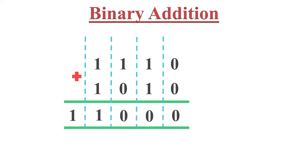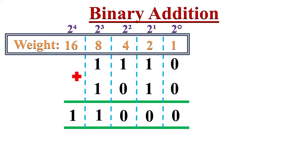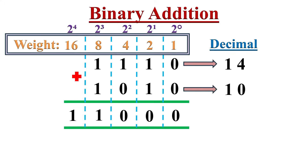Now let's check whether our addition is correct. We will convert these binary numbers into their decimal equivalents by writing the weights of each digit — powers of 2 from right to left. The decimal equivalent of the first binary number is 8 plus 4 plus 2 plus 0, which equals 14. The decimal equivalent of the second binary number is 8 plus 0 plus 2 plus 0, which equals 10. The decimal addition of 14 plus 10 equals 24. If we convert the binary addition result to decimal, it is 16 plus 8 plus 0, which is also 24. That means our binary addition is correct.